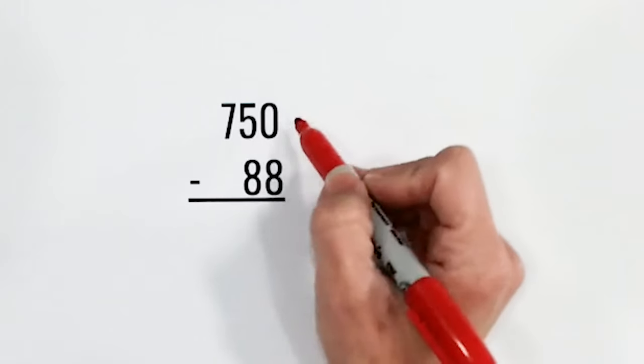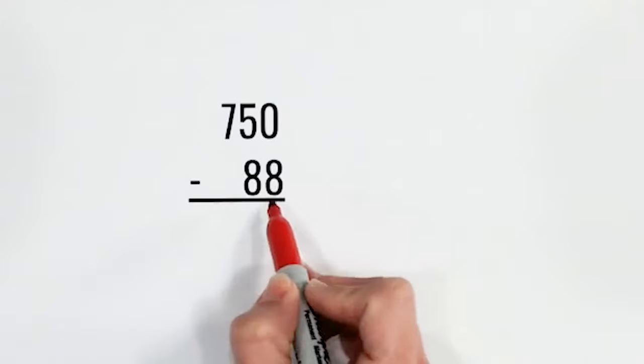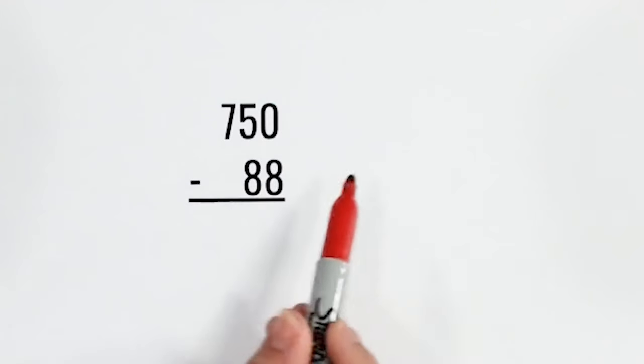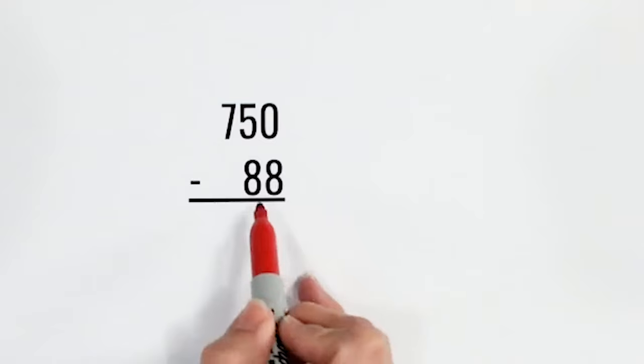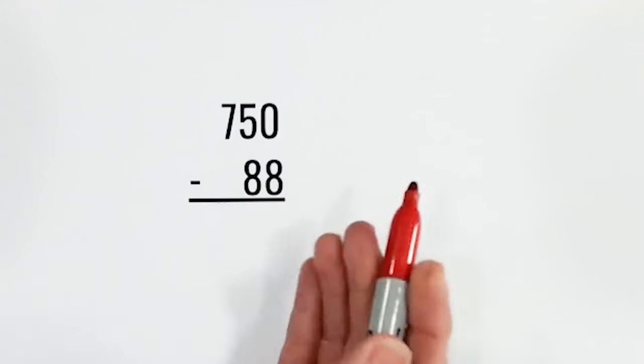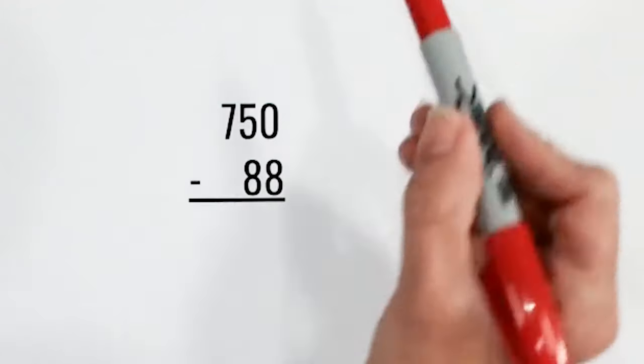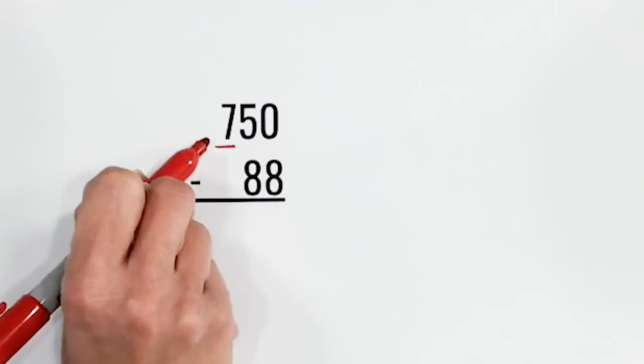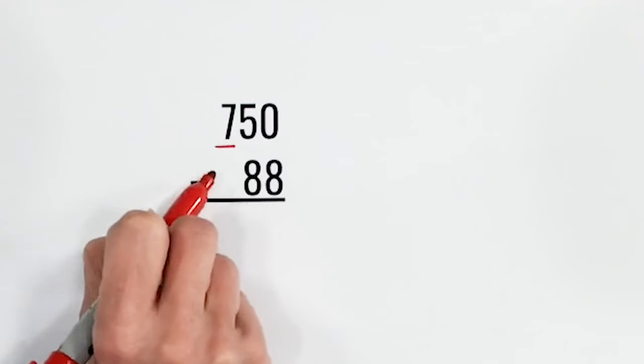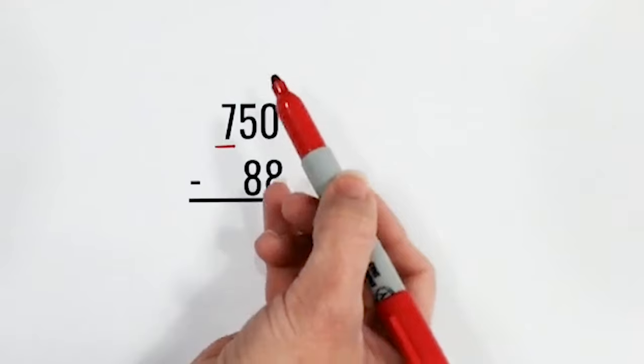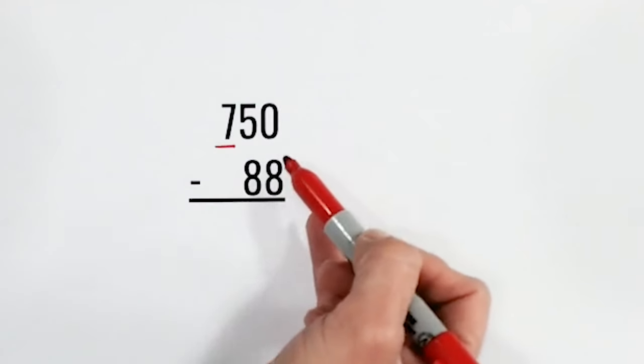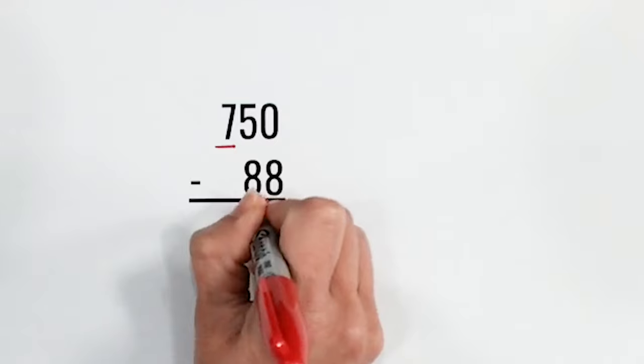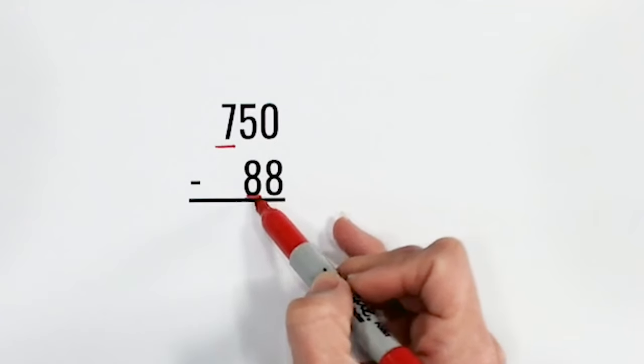In this example, we have 750 minus 88. So you can see that these don't end in the same place value. We have the 100s place here and the 10s place here. But we're always rounding each number to its highest place value. So we're looking at this 7 in the 100s place here. But this doesn't have 100s and we don't want to round all the way up to 100 and we wouldn't want to go all the way to 0. So we're going to go right to the 10s place because it's this number's largest place value.